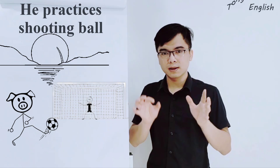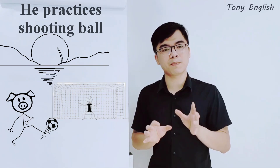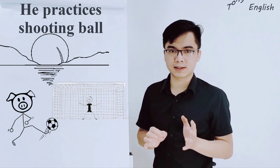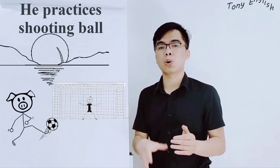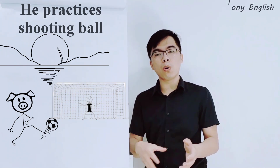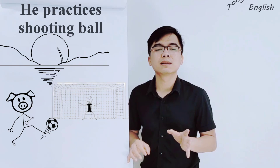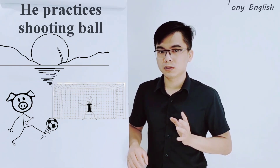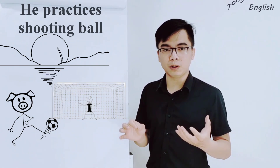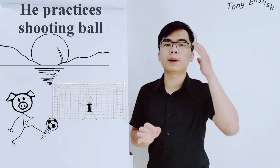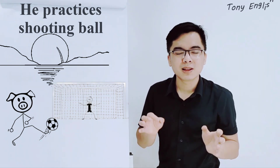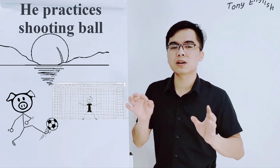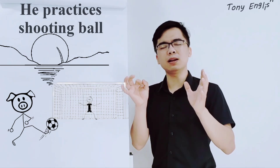This is very important — very, very, very important. Let's come to the mini-story. He practices shooting ball. What does the pig do? What does he do? He practices shooting ball. Who practices shooting ball? The little pig — the little pig practices shooting ball.